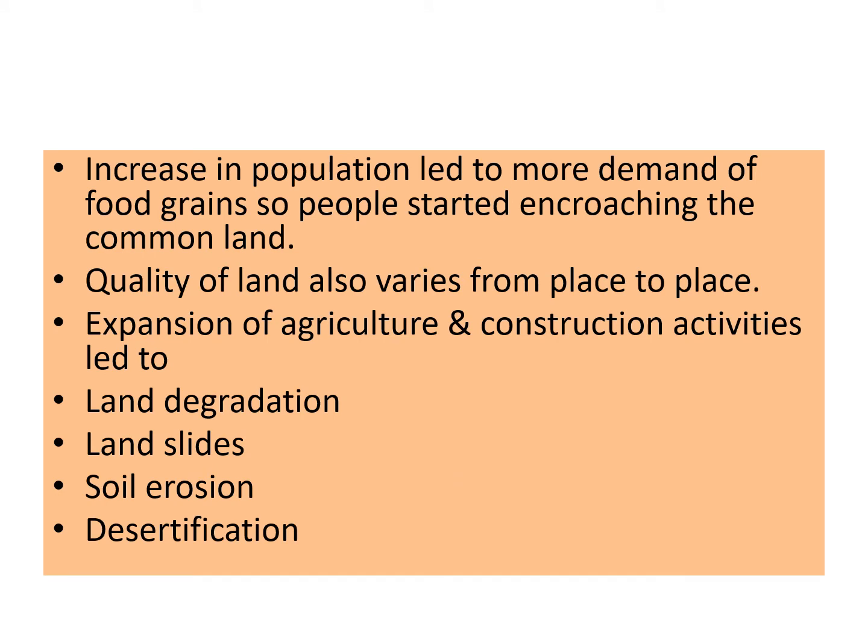Increase in population led to more demand of food grains. So people started encroaching the common land to bring more and more land under cultivation and to increase agricultural production. Quality of land also varies from place to place. Some areas have fertile soil. On the other hand, few areas have shallow soil.